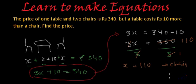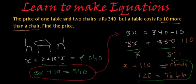And what about table? Table is rupees 10 more than a chair. So cost of the table will be 110 which is the cost of the chair plus 10, that is 120 rupees. So this is the solution where the cost of the chair is 110 rupees and cost of the table is rupees 10 more than the chair which is 120 rupees.